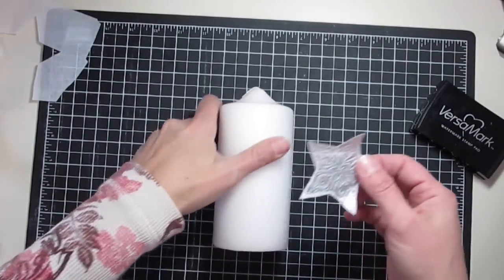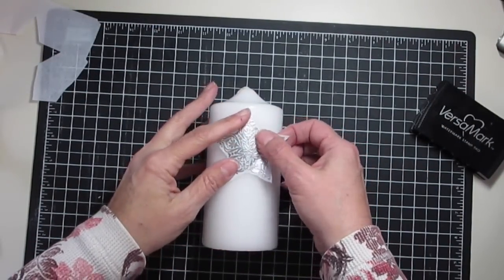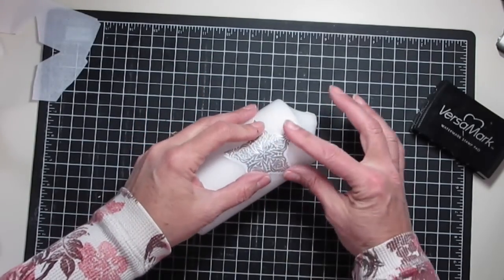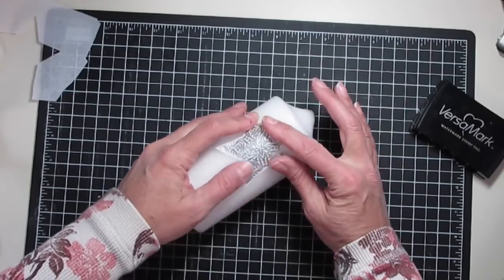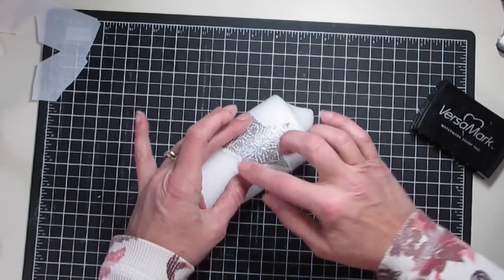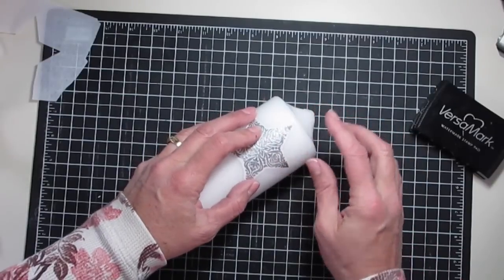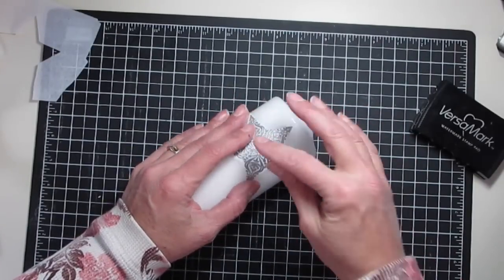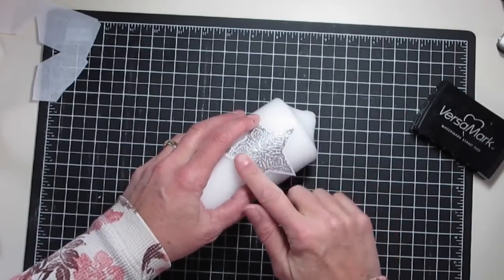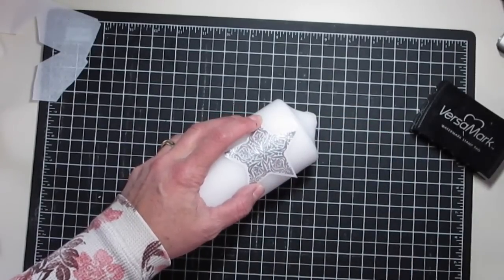Once you have that embossed, you're going to line it up where you want it on your candle and just kind of lay it on there. This might be a little more difficult with those points, but you want to make sure it's laying flat. I usually start in the middle and work my way out to the edges. You have to go quickly and you don't want the heat set in one place for very long because you're melting that wax and this is getting embedded into the wax.